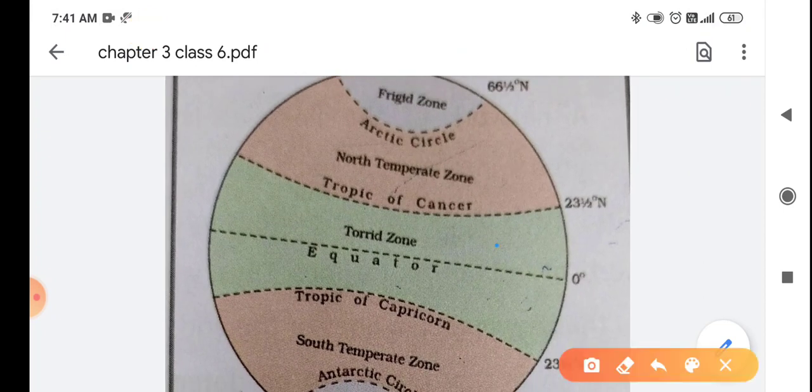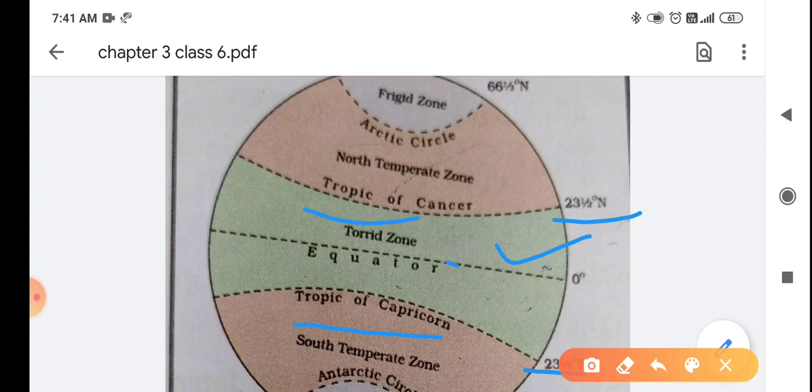First is Torrid Zone that lies between 23.5 degree North and 23.5 degree South. So Tropic of Cancer and Tropic of Capricorn is the area that is Torrid Zone. Clear?